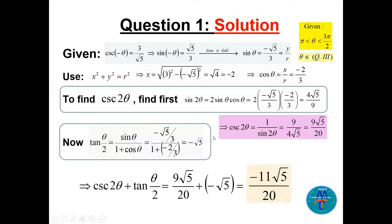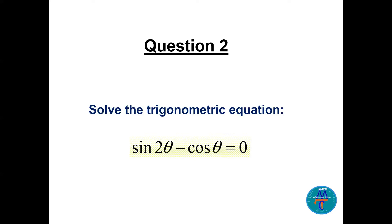For tan of theta over 2, I use the half angle formula: sine theta divided by (1 plus cosine theta). With cosine theta equal to negative 2 over 3, simplifying gives negative root 5. Adding cosecant of 2 theta and tan of theta over 2, the LCD is 20, giving a final answer of negative 11 root 5 over 20.